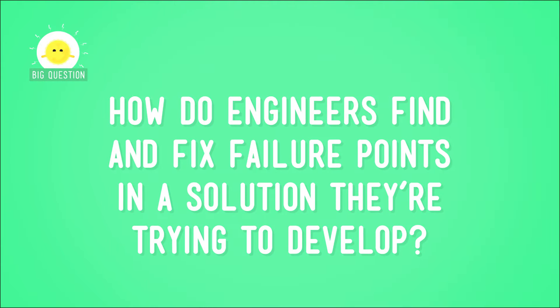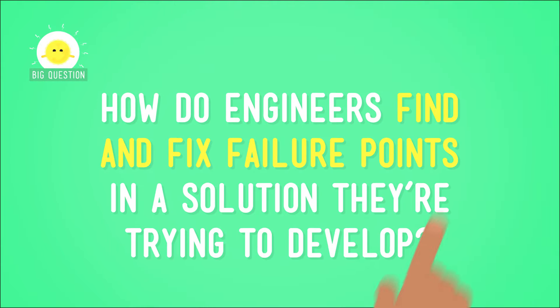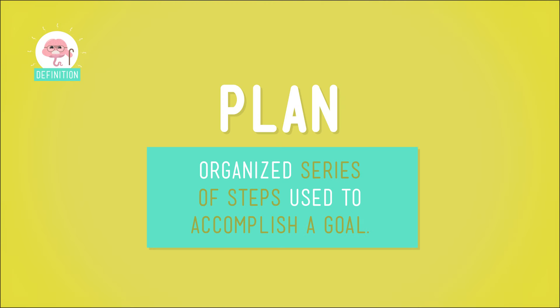So, how do engineers find and fix failure points in a solution they're trying to develop? Well, when they're testing a solution, engineers don't just jump in randomly — they make a plan. That is, an organized series of steps used to accomplish a goal, which in this case is a successful and safe solution. This plan includes isolating a variable and then doing a series of trials or tests, changing that variable each time until you find a solution that works.